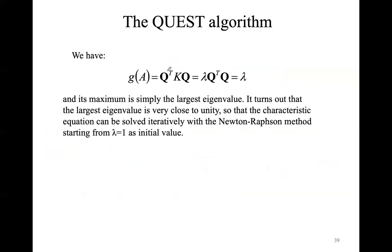Since we were able to demonstrate that to maximize the cost function Q-transpose·K·Q we have to solve an eigenvalue problem, this can also be written as lambda·Q-transpose·Q, so we have to maximize lambda. The largest eigenvalue corresponds to the maximization of the cost function. The quaternion corresponds to the eigenvector given by the maximum lambda. It has been demonstrated that the largest eigenvalue is very close to unity. So a fair method to determine the quaternion is to use iteratively a Newton-Raphson method.